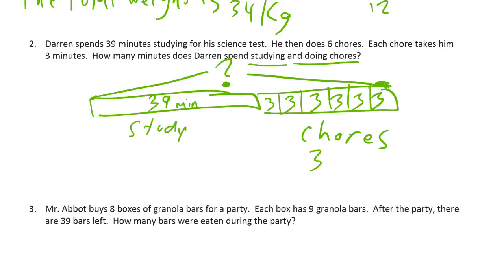So, the chores, that's three. How many threes is that? 1, 2, 3, 4, 5, 6. That's six threes, which equals 18. So, this part is 18. We have to add 39 plus 18. 17 is 9 plus 8, and then we have 57.